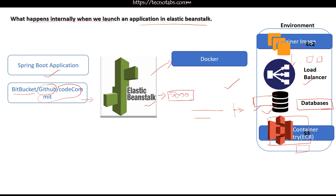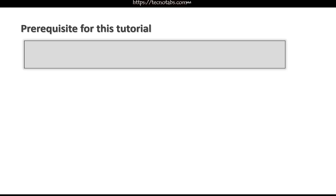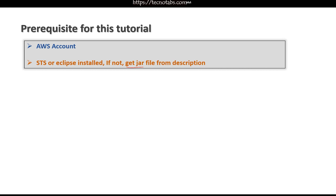The prerequisites for this video: I assume you already have an AWS account for the hands-on, and that you have STS or Eclipse installed. If you don't, that's fine — you can use the JAR file to deploy your application. You can get the link to the JAR file in the description and follow along to deploy onto Elastic Beanstalk.